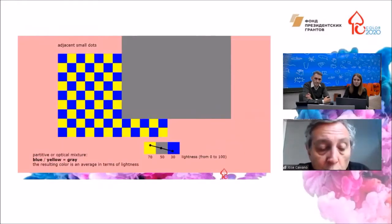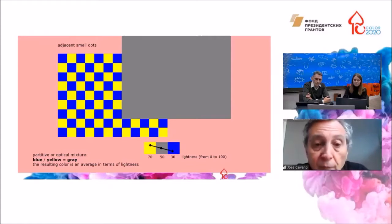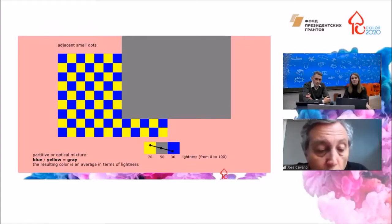Partitive or optical color mixing produces a color whose lightness is a kind of average of the original colors. For example, this optical mixture of yellow and blue generates a gray color that is lighter than blue but darker than yellow.